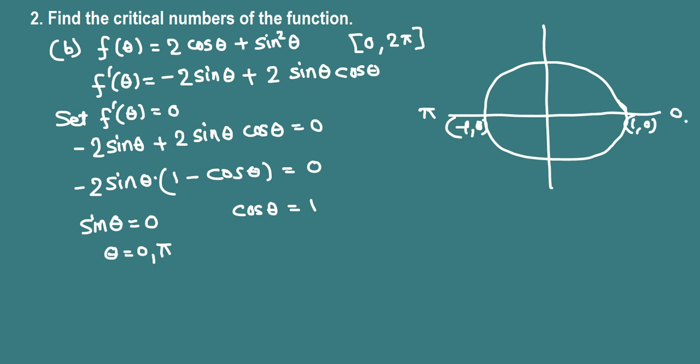Cosine theta equals 1. So here is 1, this is negative 1. If we go back all the way to 0 and 2 pi, in fact 0 is same as 2 pi. So cosine theta equals 1 here, so 0 and all the way back to 2 pi. Theta equals 0 and 2 pi.